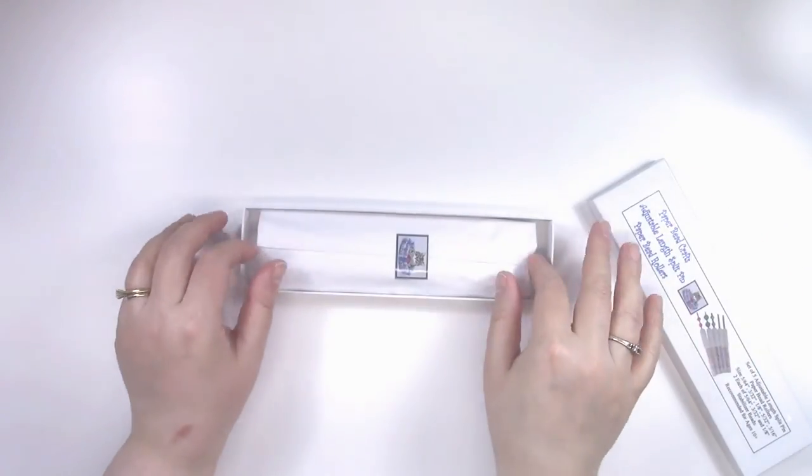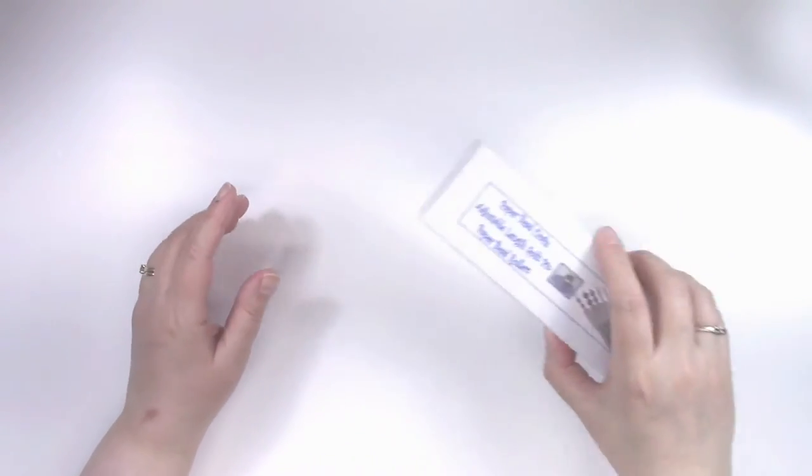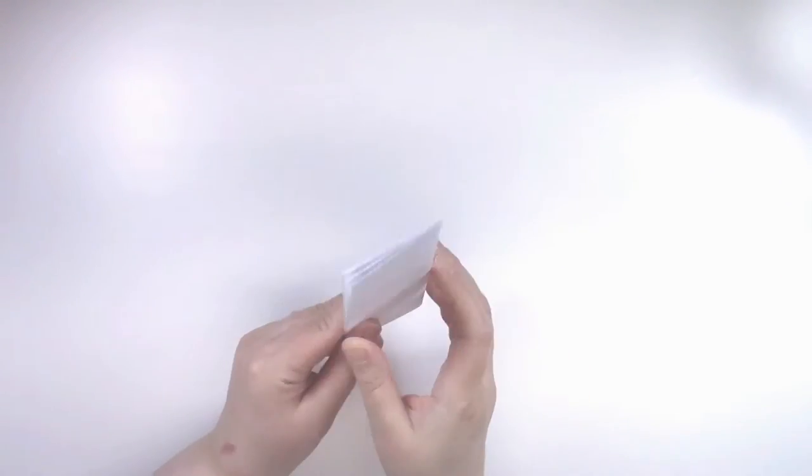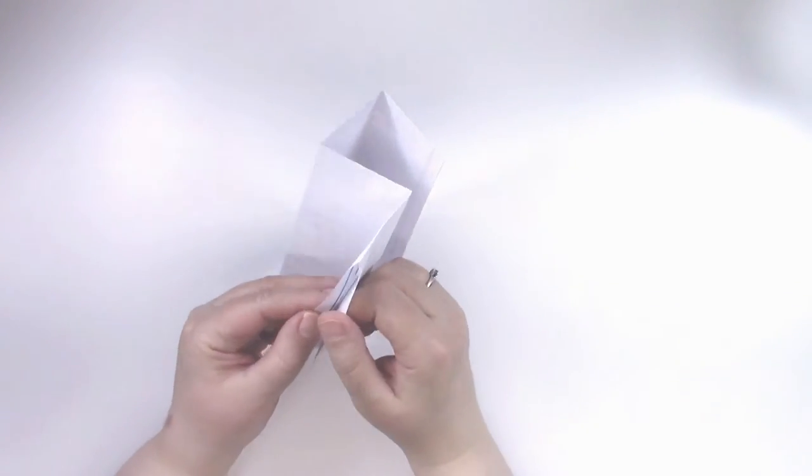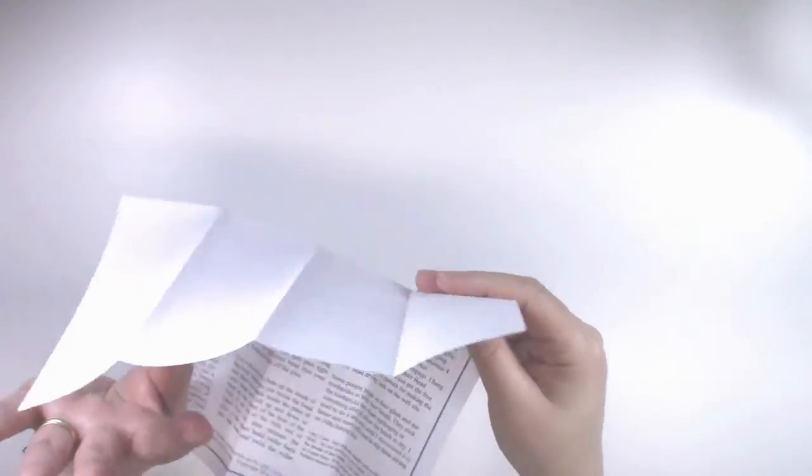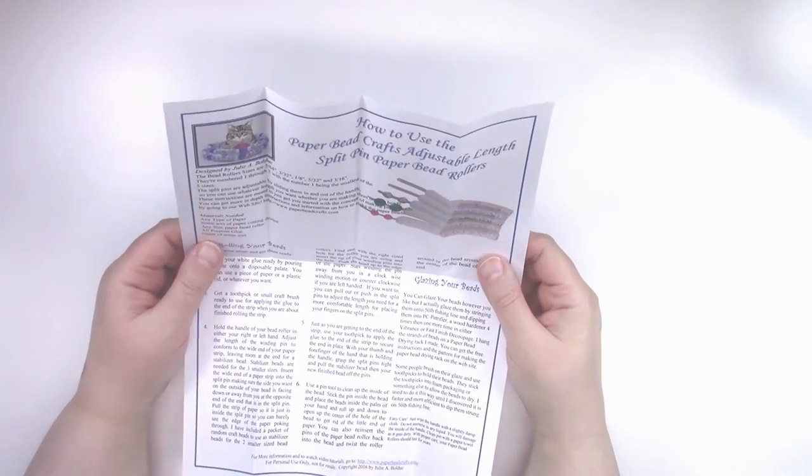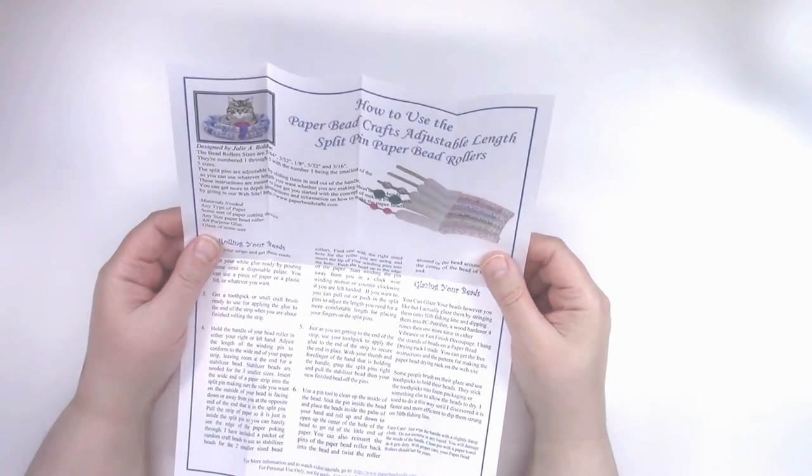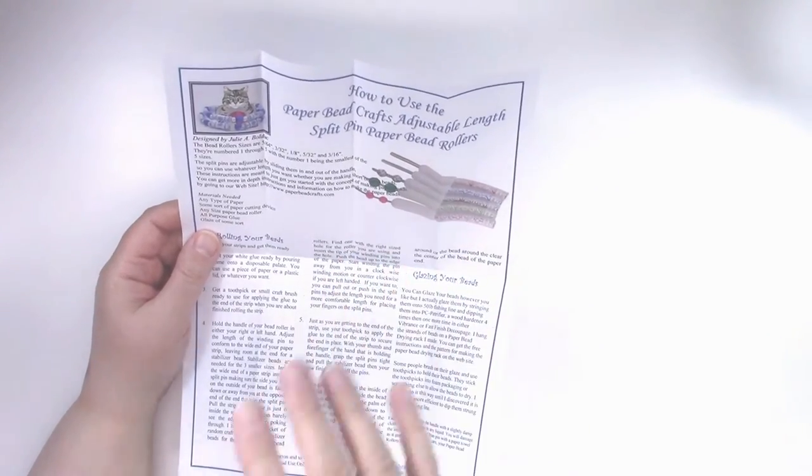When you open the box, it'll be wrapped up in tissue paper. You're going to get five different sizes along with a set of instructions on how to use these. These are used a little bit different from the regular split pin paper bead rollers that I have on the site. Those are being discontinued and these are going to be used to replace those.